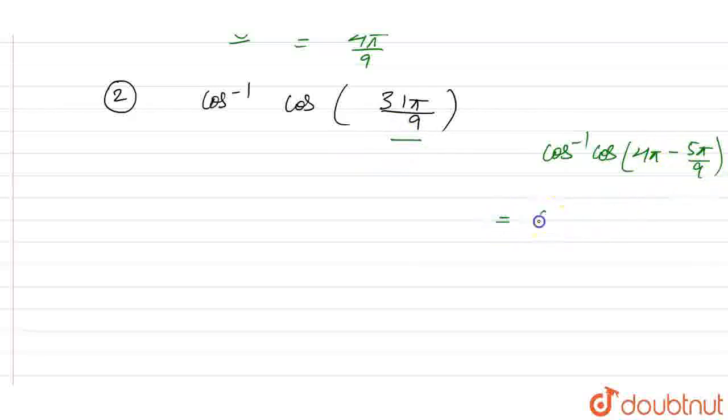We know that cos of 2n pi minus theta is equal to cos of theta. So, we have this term as cos inverse cos of 5 pi by 9. And cos inverse of cos of 5 pi by 9 is nothing but 5 pi by 9.